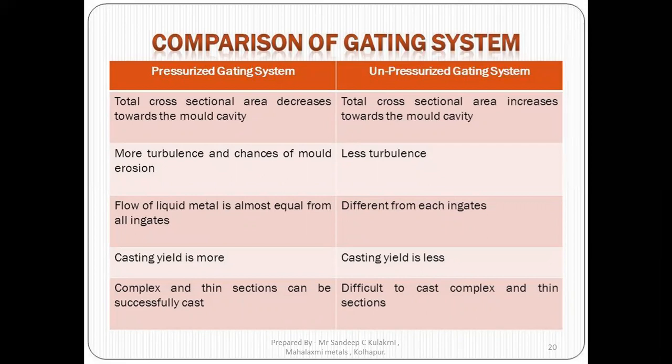Comparing pressurized versus non-pressurized gating systems: in the pressurized system, the total cross-sectional area decreases toward the mold cavity, meaning the ingate area is the smallest. In the non-pressurized system, the total cross-sectional area increases toward the mold cavity, meaning the ingate area is the largest. There is more turbulence and more chance of mold erosion in the pressurized system due to back pressure, whereas there is less turbulence and less chance of mold erosion in the non-pressurized system. Flow of liquid metal is almost equal from all ingates in the pressurized system, while flow differs between ingates in the non-pressurized system.